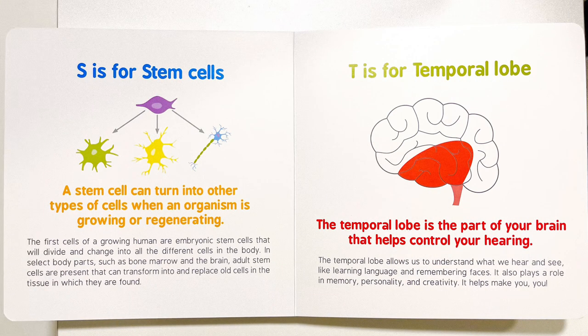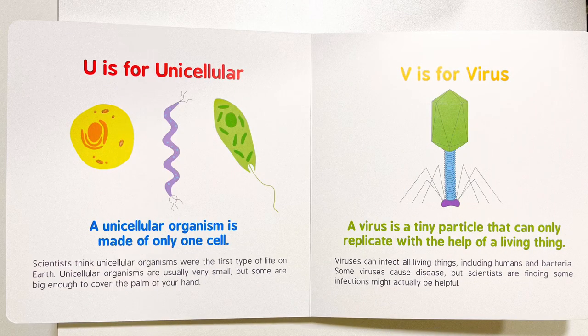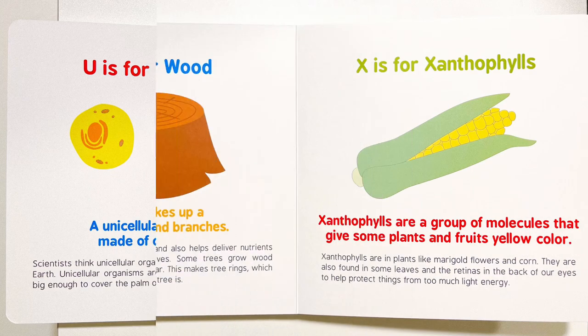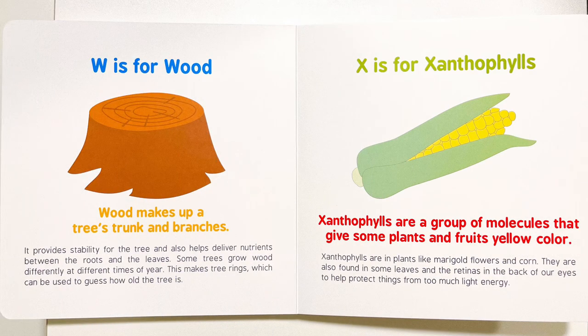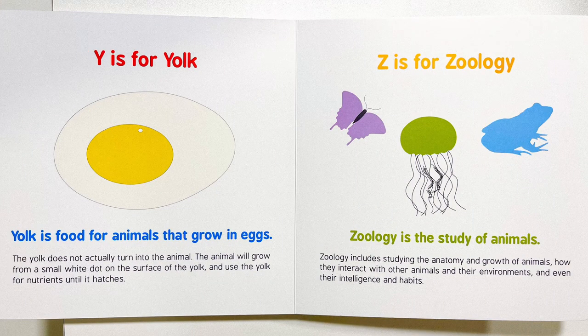T is for temporal lobe. U is for unicellular. V is for virus. W is for wood. X is for xanthophils. Y is for yolk. And Z is for zoology.